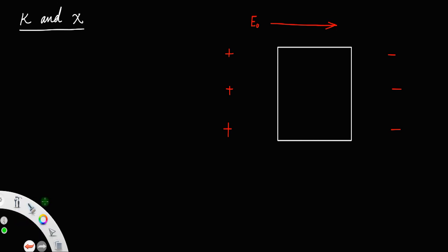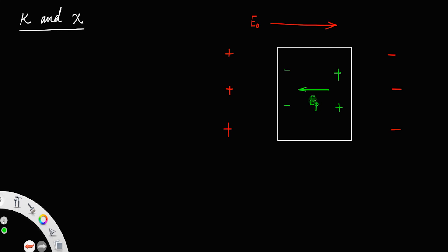What will happen to the charges in the dielectric slab? The negative charges come near the positive charge and the positive charges come near the negative charge, but the number of charges in the dielectric will be smaller than the external charge because they are insulators. So there will be an internal field from right to left — let us call that E_p — and this E_p opposes E₀.